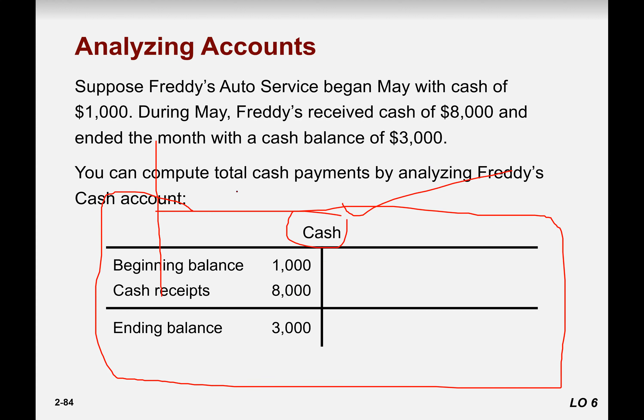Let's see the illustration. We know that if there is a cash receipt, cash is increased, so it is written on the debit side. If there is a payment, cash decreases — that means credit — so it is written on the credit side. We can analyze it like an equation: if one variable is missing, you can rearrange the equation and find the missing data.